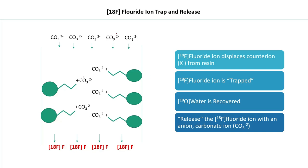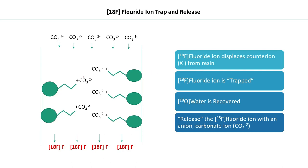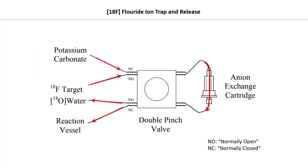As carbonate ions pass through the column, the fluoride ion is released from the bottom. This completes the trap and release process: first, F-18 was trapped on the bead via the positive charge; second, F-18 was released by the carbonate ions. That is how the trap and release process is accomplished.